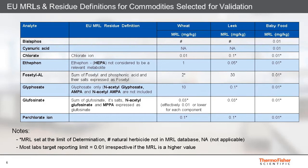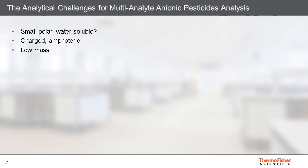Another issue is the variation in current maximum residual levels for different commodities, most of which are set at the limit of determination. The table covers the three matrices used for validation in this study: wheat, leek, and baby fruit. In most cases, laboratories use a target reporting limit of 0.01 mg per kg (10 ppb), even where maximum residual levels are higher, as in the case of glyphosate in wheat. Each stage of the analysis also presents an analytical challenge.